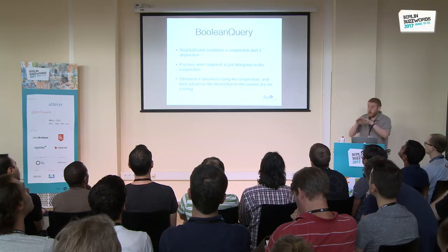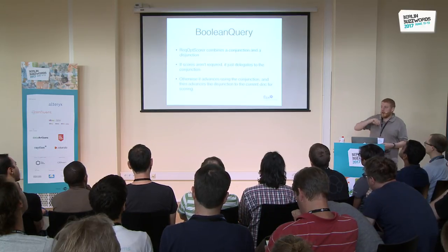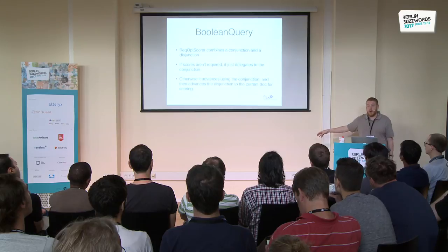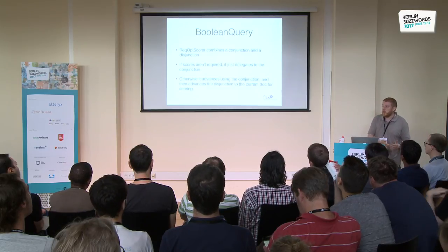Required optional scorer combines conjunction and disjunction. A nice thing to point out is if we don't care about scores and only care about matches, we can ignore the disjunction part entirely - it's the conjunction part which drives whether something matches; disjunction just adds to the score. If scores are required, it advances using the conjunction and then advances the disjunction up to that same doc ID to get the scores. The required exclusion scorer takes any of the other three scorers to drive the iteration, and it advances the child scorer and checks against the exclusion scorer to determine whether something should match.